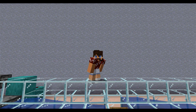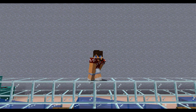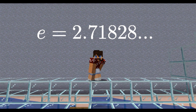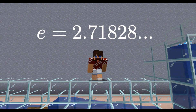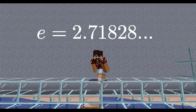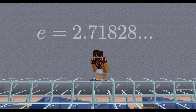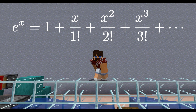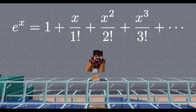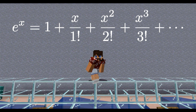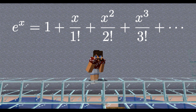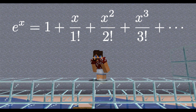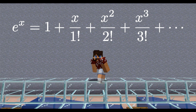To five decimal places, the value of E is 2.71828. For today's episode, we need to consider the Taylor series for the function E to the X, which is given by E to the X equals 1 plus X over 1 factorial plus X squared over 2 factorial plus X to the third over 3 factorial, and so forth.